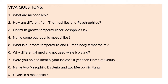Now let's move to viva questions. Some possible questions are: What are mesophiles? How are they different from thermophiles or psychrophiles? What is the optimum temperature for mesophiles? The optimum temperature is 35 to 37 degrees Celsius, though they can grow from 20 to 45 degrees Celsius — growth is slow at 20 to 25 degrees and faster at optimum temperatures. Other questions include: Name some pathogenic mesophiles; What is our room temperature and body temperature; Why is differential media not used during isolation; Were you able to identify your isolate, and at what level — at least genus level is expected.